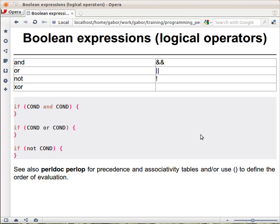In Perl there are two sets of logical operators or boolean operators. One set is the words: and, or, not, and even xor. Another set is the signs: the two ampersands, the two pipes, and the exclamation mark. For xor there is no parallel sign.